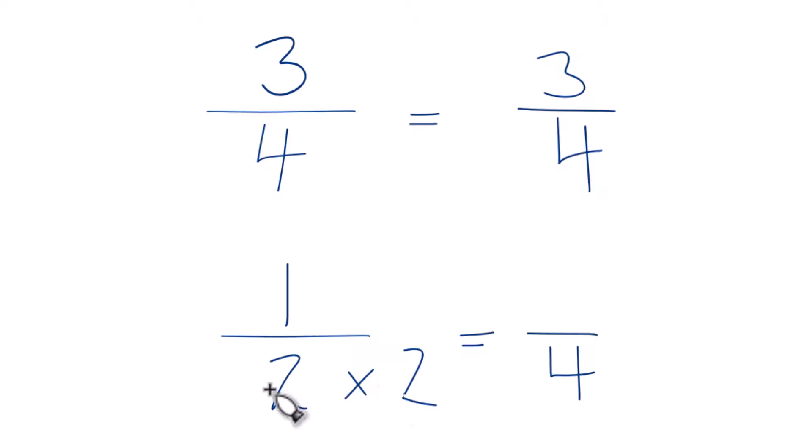And since we multiply the denominator by 2, we need to multiply the numerator by 2 as well because 2 over 2, we're just multiplying by 1. We don't change anything. 1 times 2 is 2. And 2 fourths and 1 half, they're the same. They're both 0.5. Just now we have 4 in both denominators.